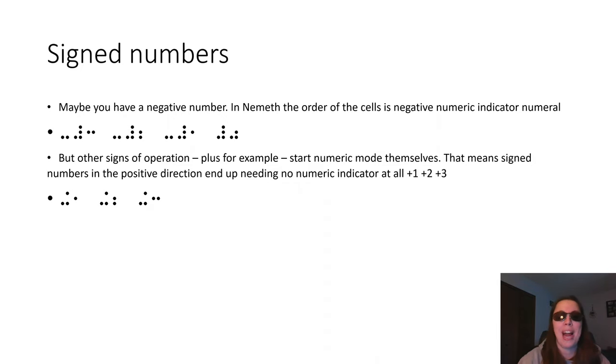Once you get into adding and subtracting, there are also situations where we use signed numbers. That means a number that is either labeled as a negative or even distinctly labeled as a positive. I see that a lot in chemistry when you have like plus two protons. If you have a negative number in Nemeth, the order of cells, this is really important, is the negative indicator, then the numeric indicator, then the number. So I have here negative 3, negative numeric indicator 2, so this is a negative 2, a negative 1, and then just for example, a 0, which would not ever have a sign.